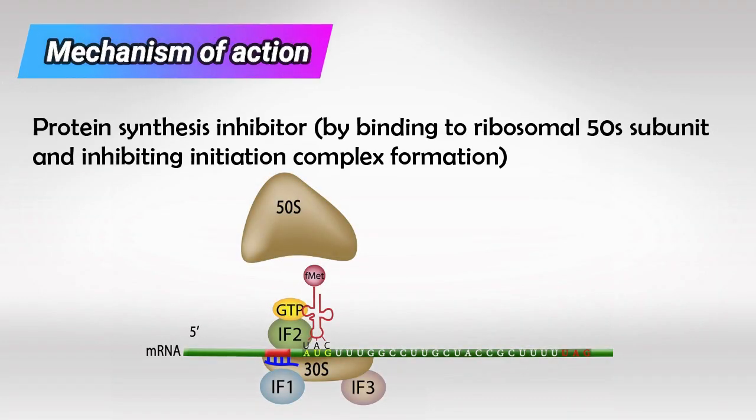Linezolids bind the 50S ribosomal subunit to inhibit the initiation complex, so it's a protein synthesis inhibitor. The bacterial ribosome has three main parts, the first of which is called the initiation complex, which is responsible for the initiation of protein synthesis.